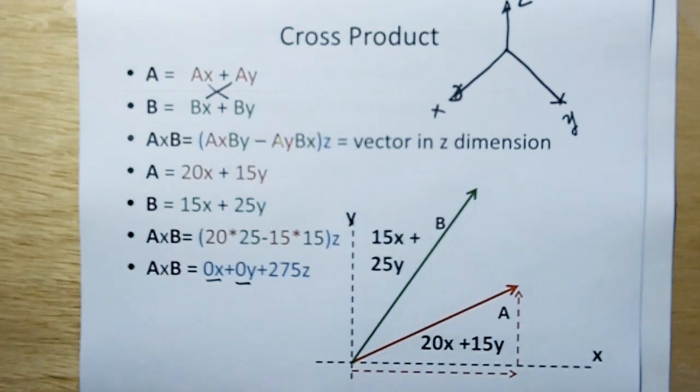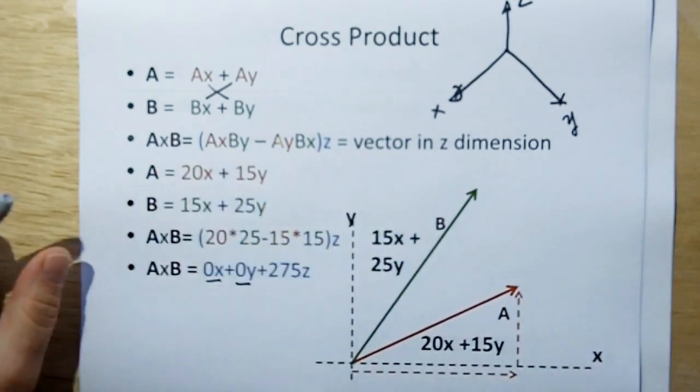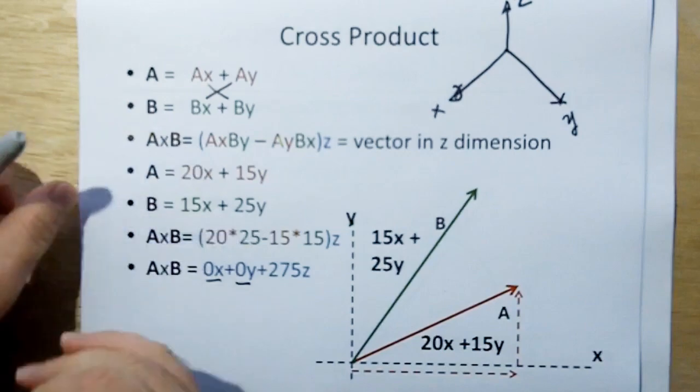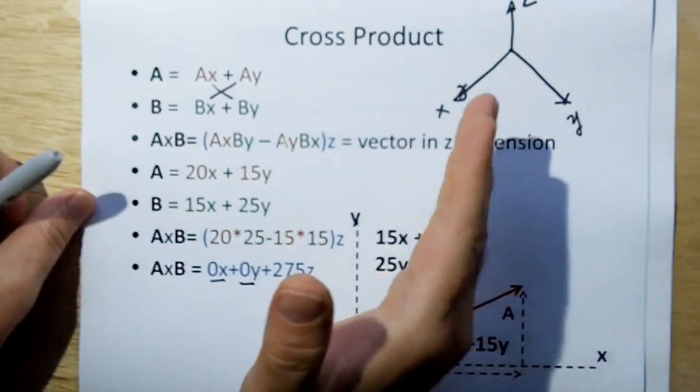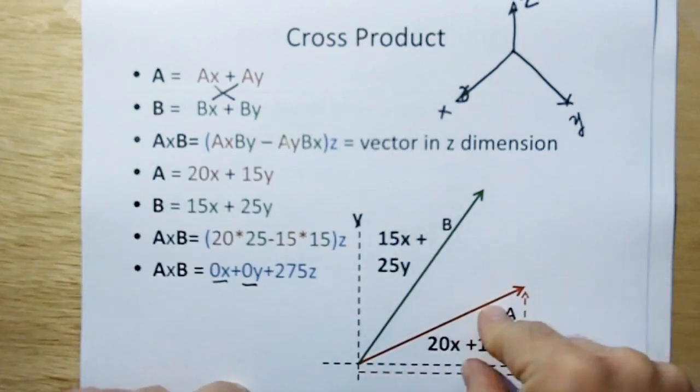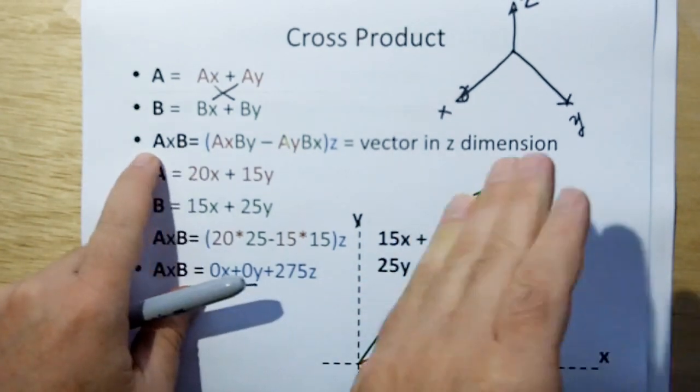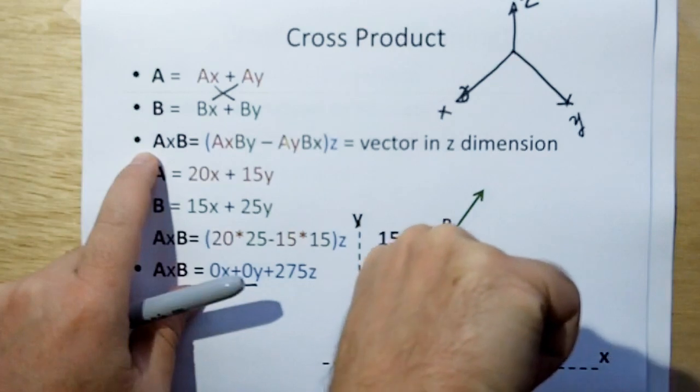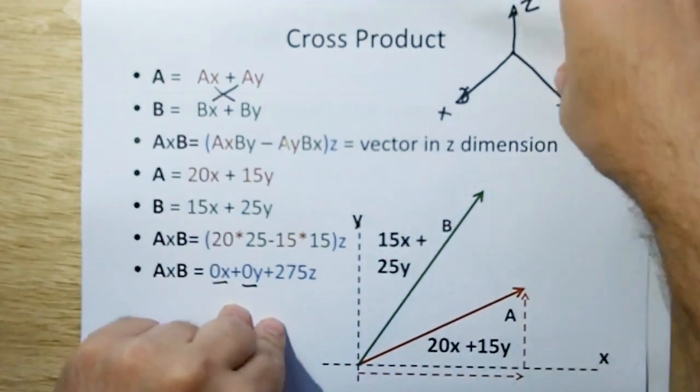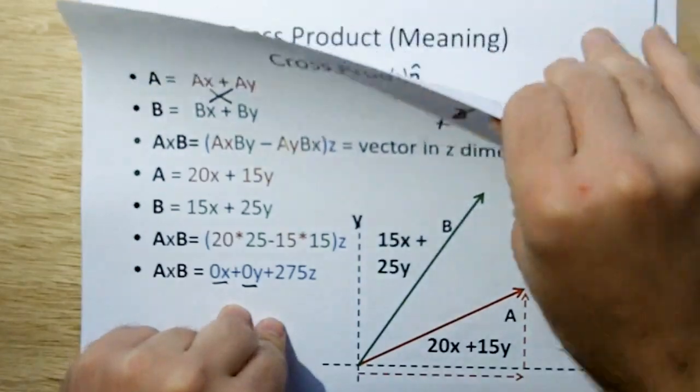Now the interesting thing is that normal, this produces a normal. The way you find out where that normal is going to be is if you put your hand in the direction, if you have A cross B, you put your hand in the direction of A, you swing it to B, and that means the normal is coming up out of the page between those two vectors. But if you do B cross A, go the other way, that means B cross A, the normal would be going down into the page. Unless you're using the left-hand rule, then everything is reversed.